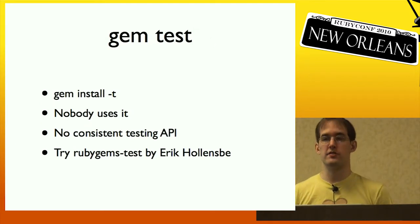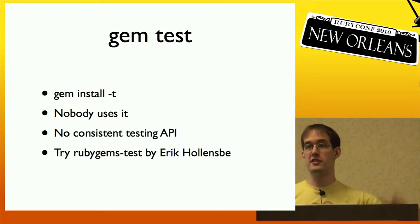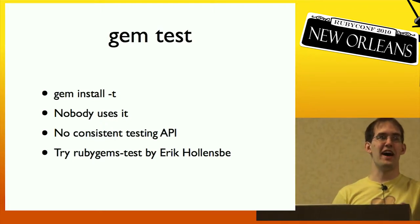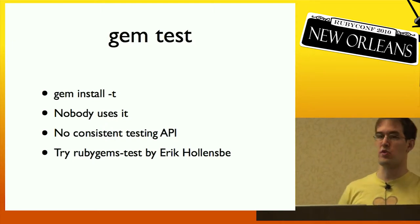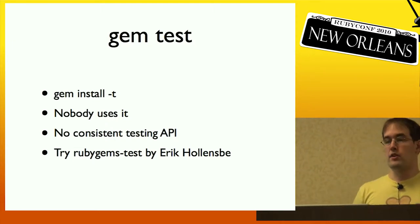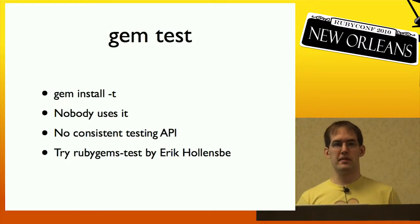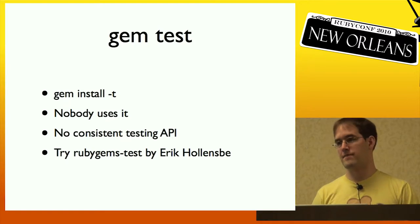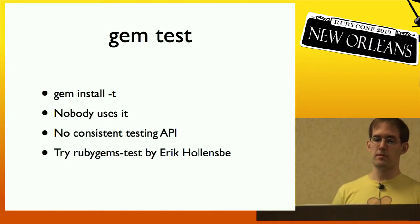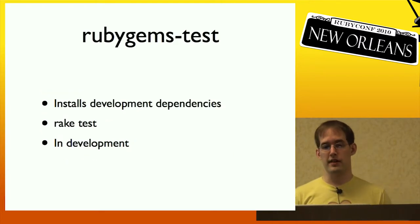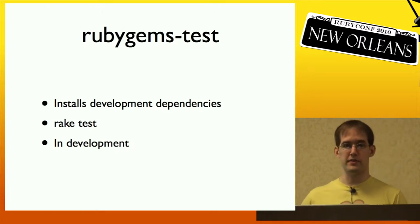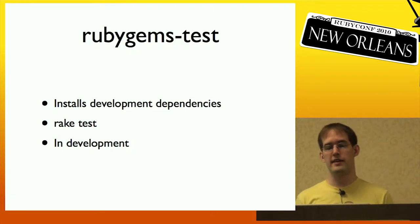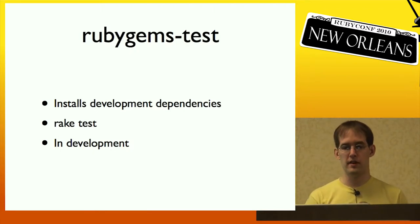There's also gem test, which is also run by 'gem install -t'. I don't think this actually works anymore. One of the problems is that now in Ruby we've got half a dozen popular testing frameworks, and there's no consistent API across these to figure out how to run the tests. It's just not something that's easy to do in RubyGems. So Eric Hodel is working on RubyGems Test. One of the other things the gem test command doesn't do is install development dependencies. RubyGems Test takes care of this for you and uses rake test. It's still in development, so if you want to help out, you can talk to Eric on the IRC channel.